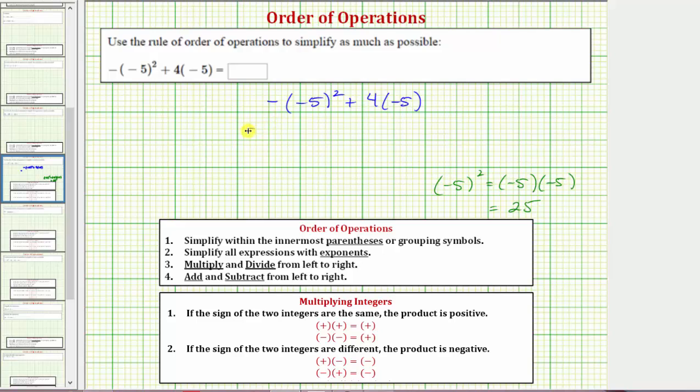So this simplifies to negative. Let's put the positive twenty-five in parentheses for this step, and then we have plus four times negative five.